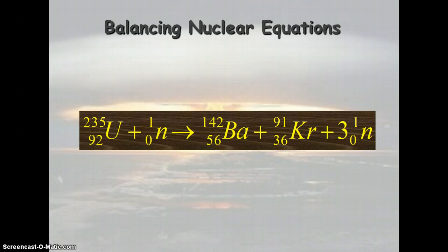So here we see a nuclear equation. We have uranium, which is our radioactive element. Remember, mass is on top and protons are on the bottom. Here we have a neutron. It has a mass of one, so it has one neutron, no protons.